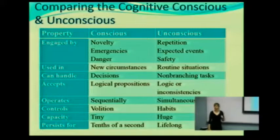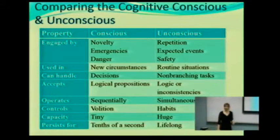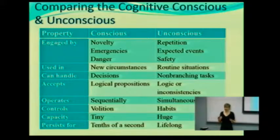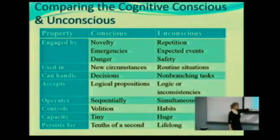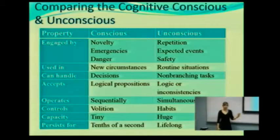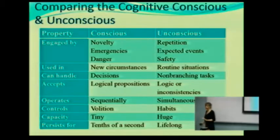Some say the brain is 10 bazillion terabytes — that's actually an estimation based on computer modeling. We have no way to actually test that to see if it's true; we can't really say how big it is. And consciousness persists for as little as tenths of a second, while unconsciousness can arguably last an entire lifetime, depending on the information.